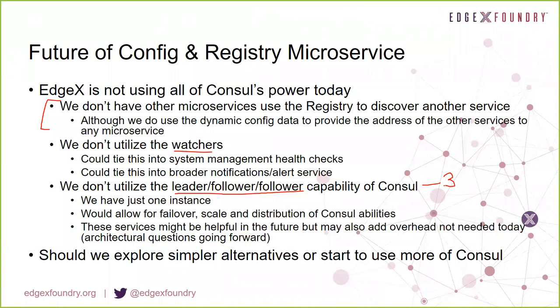As all architecture decisions are, there are always pluses and minuses. Should we be exploring simpler alternatives, or do we like Consul and maybe want to start using some of its richer, more enterprise capabilities to help EdgeX operate even better? Interested in anybody's input on that as we work through not just getting EdgeX up and running for things like our Barcelona release, but going beyond that and thinking about future capability. Nothing is always straightforward and black and white, but there are lots of gray areas and potential out of Consul going forward.